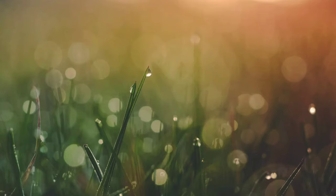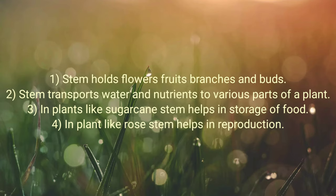So children, I hope you understood the functions of stem in a plant. Stem holds flowers, fruits, branches and buds. Stem transports water and nutrients to various parts of a plant. In plants like sugarcane, stem helps in storage of food. And in plants like roses, stem helps in reproduction.